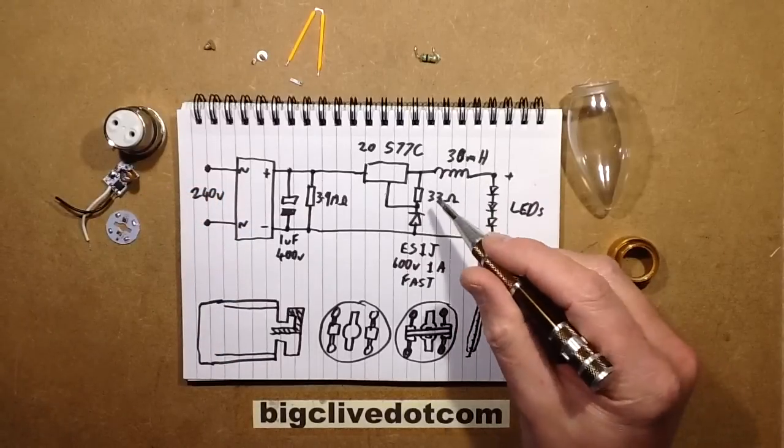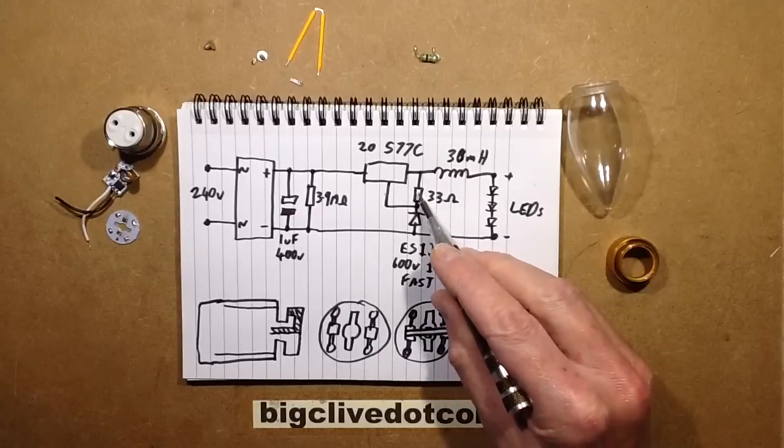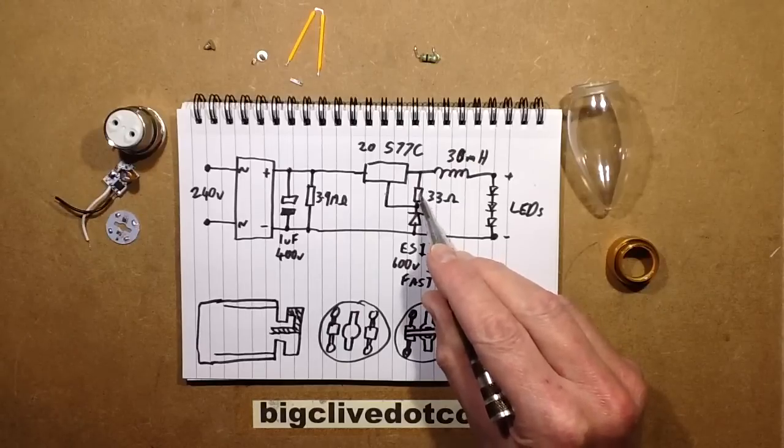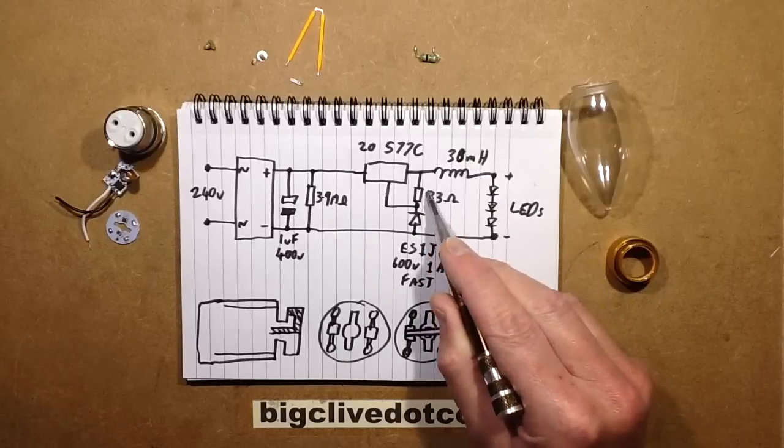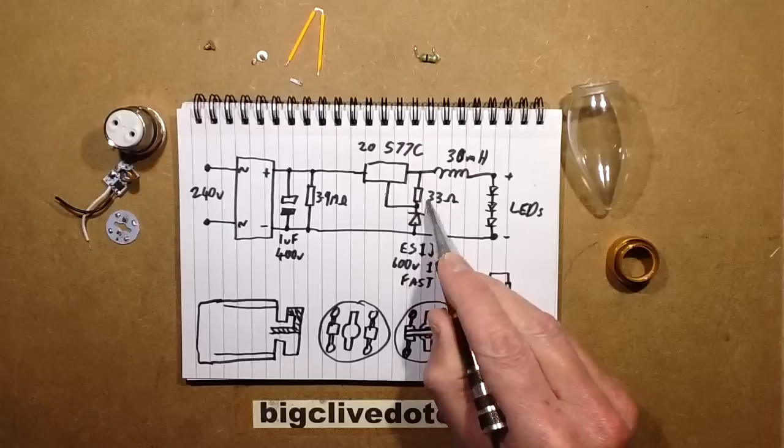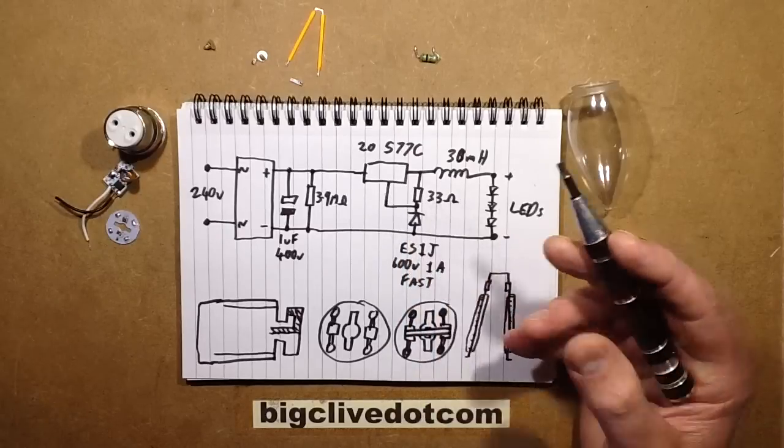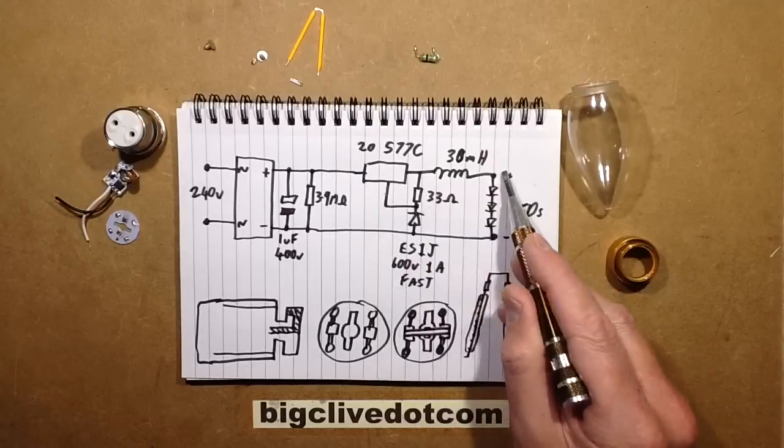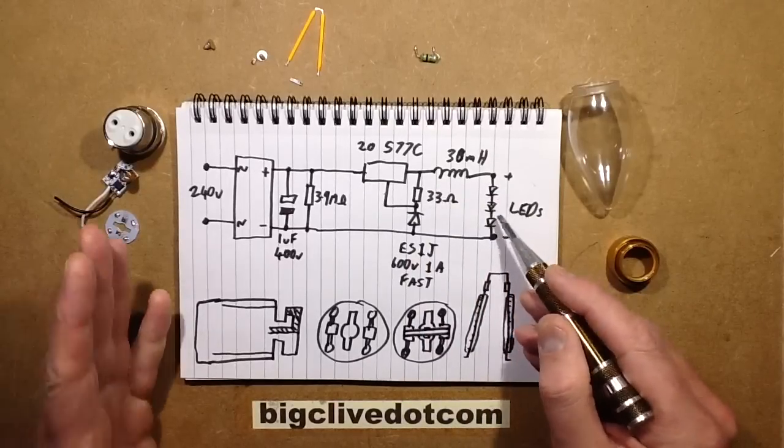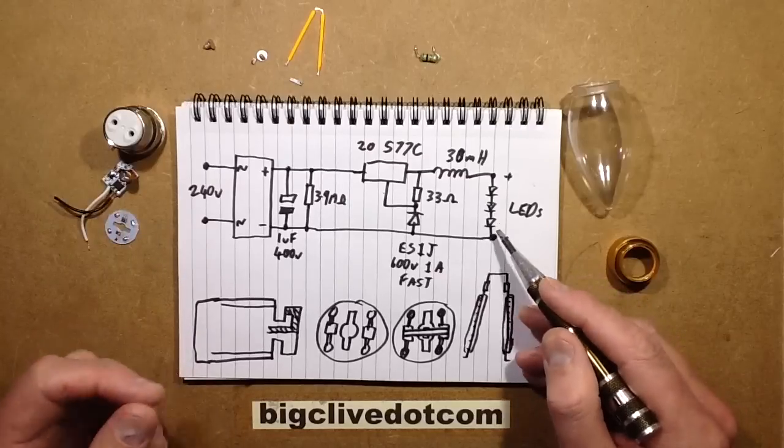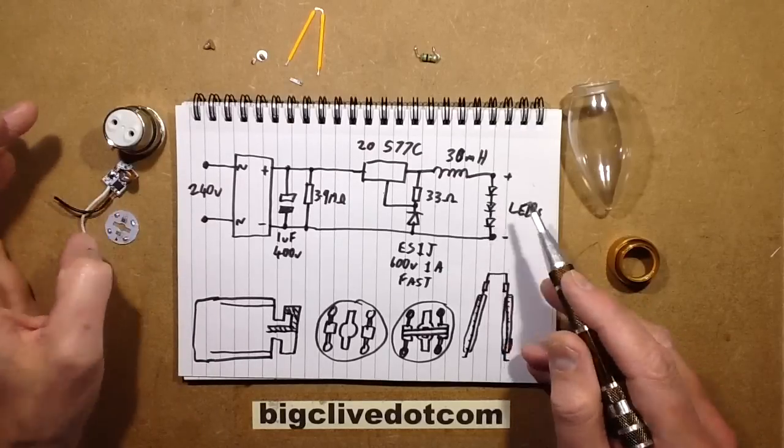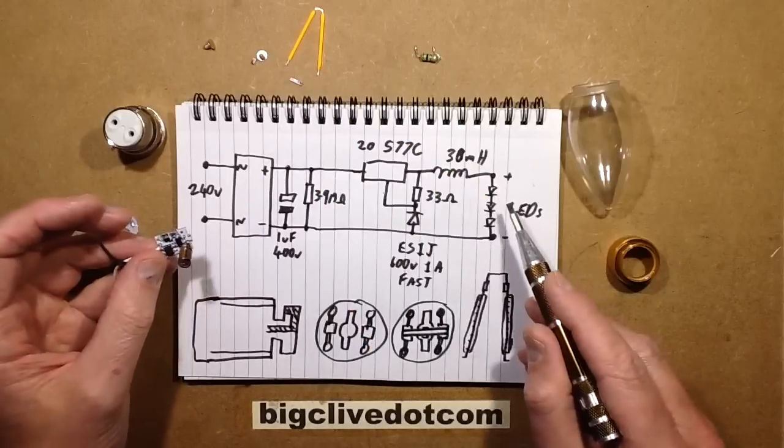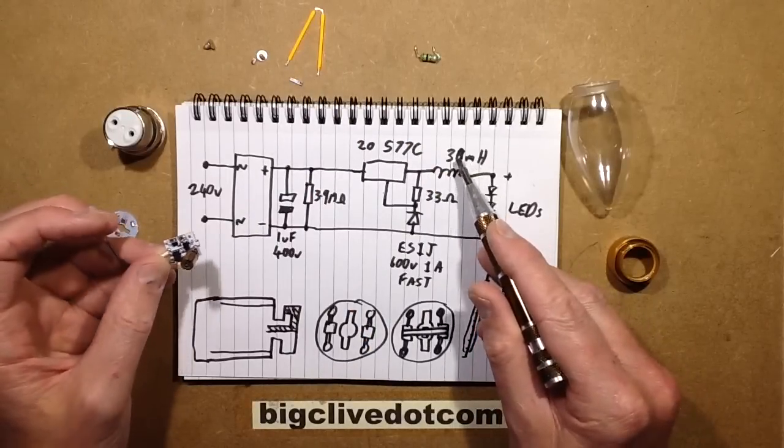And this 33 ohm resistor must be to detect, it must have multi-function. I'm guessing it sets current maybe, or is that being set by the value of the inductor? But it also provides the feedback to the chip itself and maybe provides a voltage rail as well. So it's really quite heavily integrated. Then it goes out to LEDs and that is probably about 140 volts worth of LEDs.